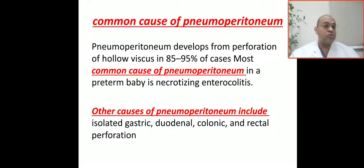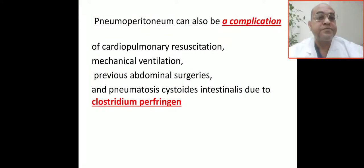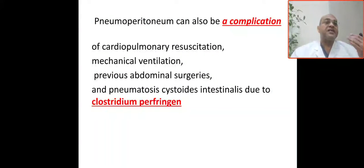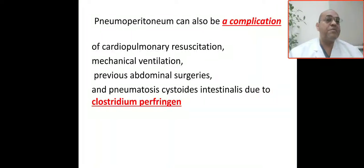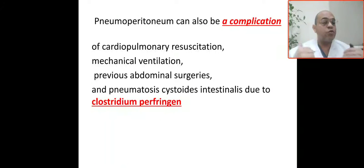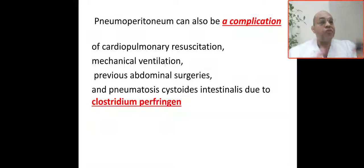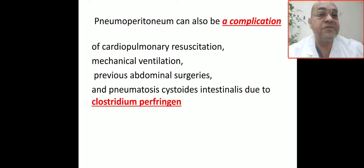Other causes of pneumoperitoneum include isolated gastric, duodenal, colonic, or rectal perforation. It can also be a complication of cardiopulmonary resuscitation, mechanical ventilation, previous surgery, or infection with Clostridium perfringens.